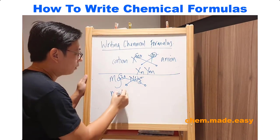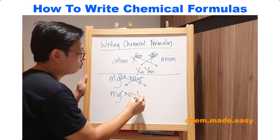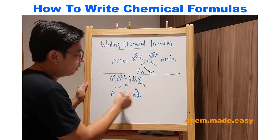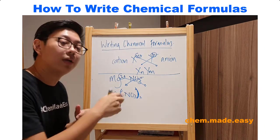So this gives you Mg(NO3)2. Now you want to make sure you have the brackets, because what you actually have is two nitrate ions,